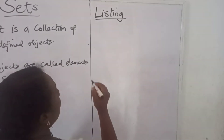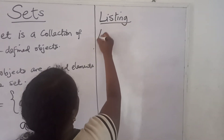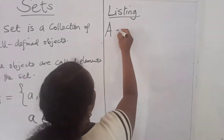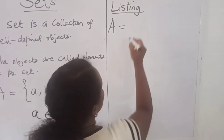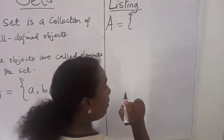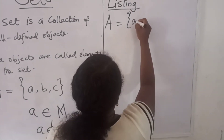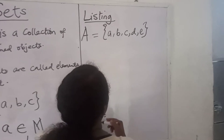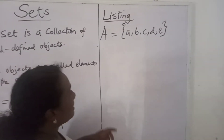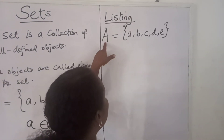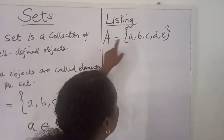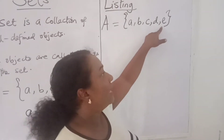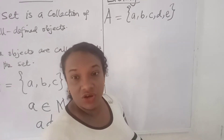In listing, we have a set — let's say A — and the elements of the set are all going to be written one after the other. For example, set A is the set which contains the elements A, B, C, D, E.